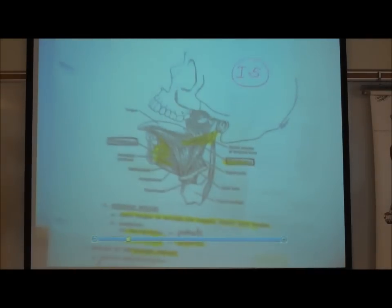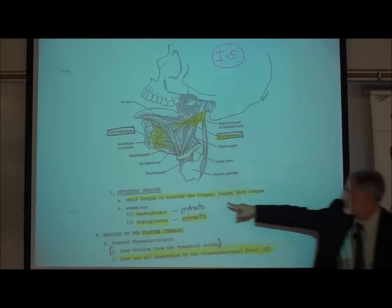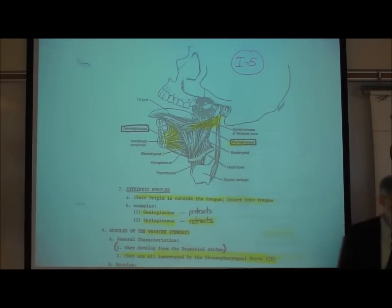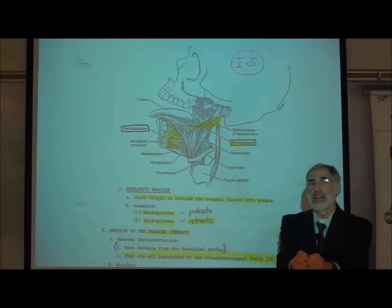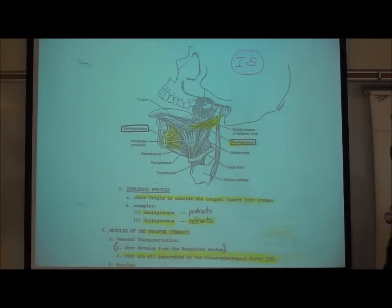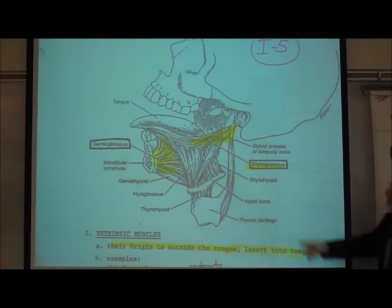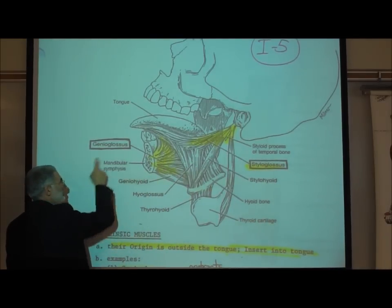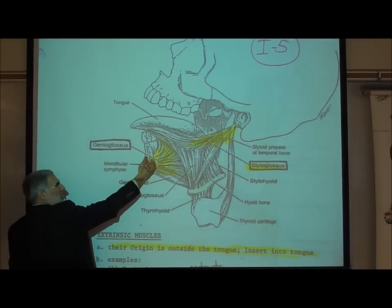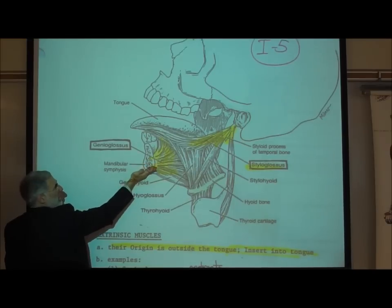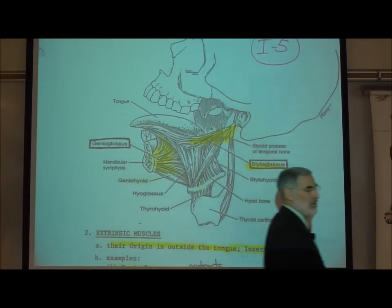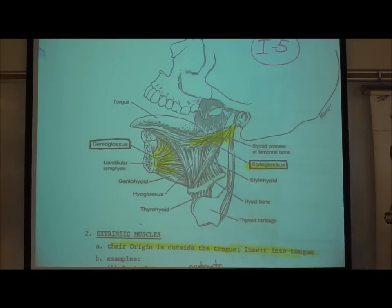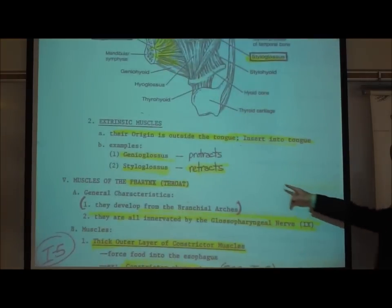On I5, in addition to the intrinsic muscles inside the tongue, there are extrinsic muscles. The extrinsic muscles of the tongue have their origin outside the tongue, but the muscle inserts on the tongue — and what a muscle inserts on is what it moves. We're going to give you two extrinsic muscles of the tongue to know. The genioglossus originates on the inside border of the mandible, inserts on the underside of the tongue, and it protracts — sticks out — the tongue.